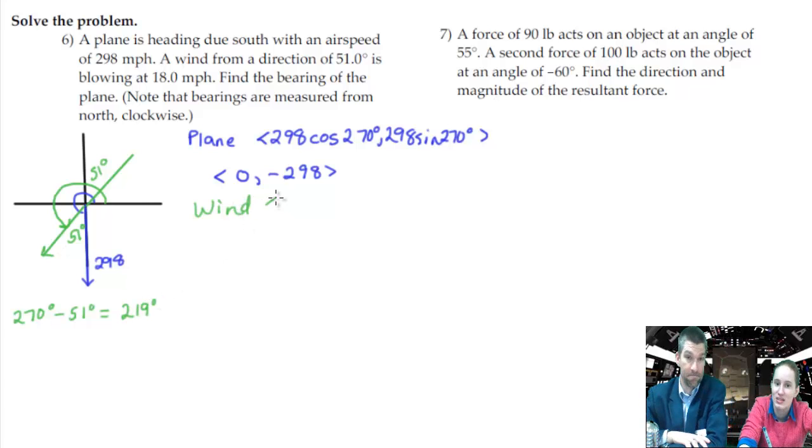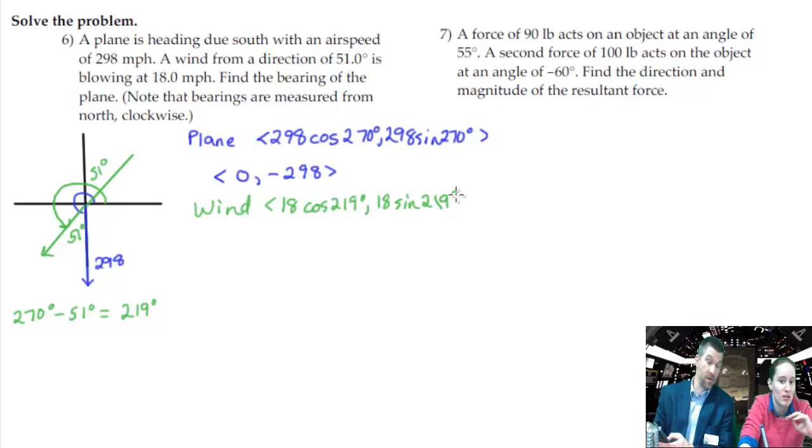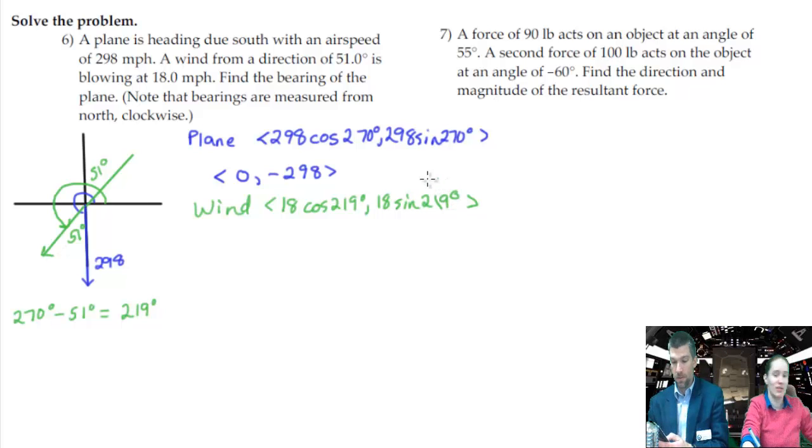219. So at 18 miles per hour, cosine 219, 18 sine. Oh, looks like I'm going to have to punch these in. That's not on our unit circle. No, because it ends in 9. 18 cosine 219.